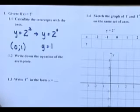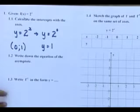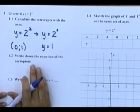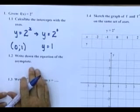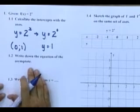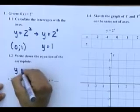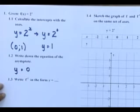Secondly, number 2, write down the equation of the asymptote. Now by now that shouldn't be a problem because as I've mentioned in the characteristics, remember we said y equals 0 is your asymptote.